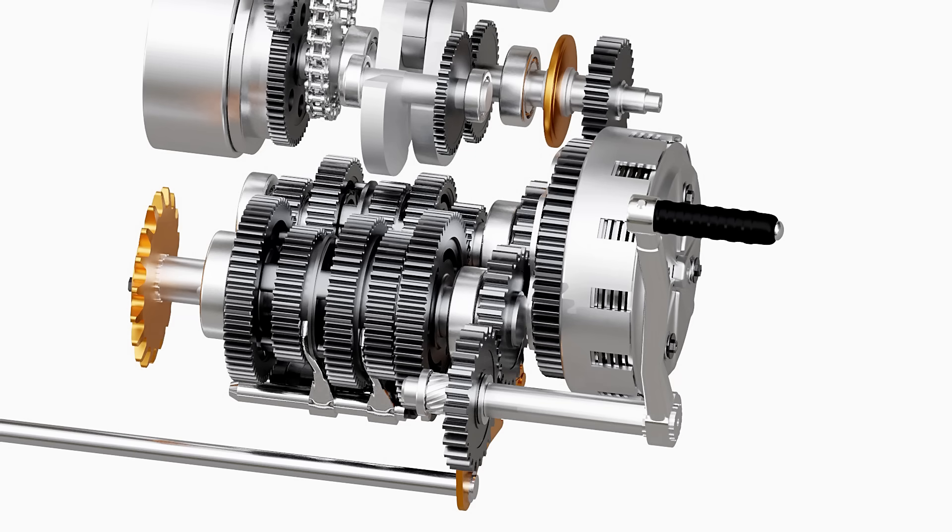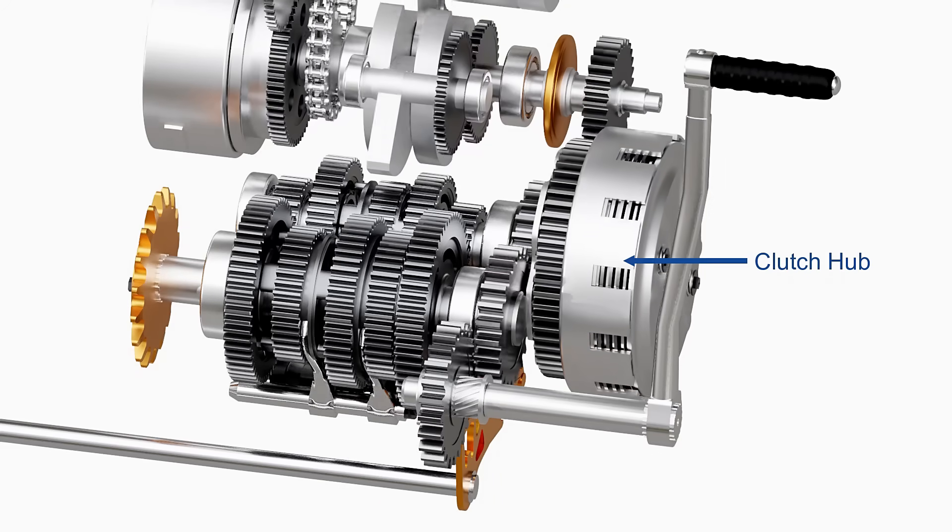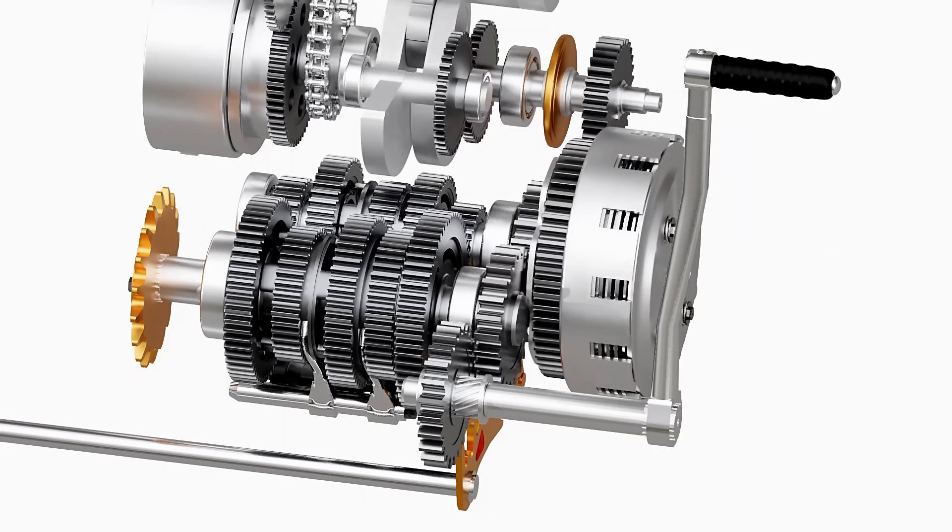As the lever is descended further, the gear spins on its axis and transfers the power to the clutch hub. The clutch hub transfers the power to the crankshaft and eventually to the engine.